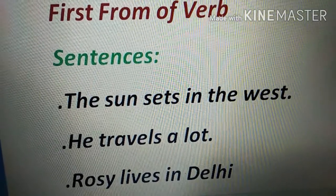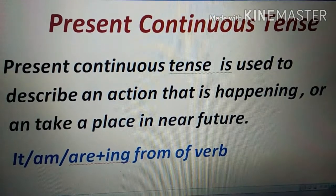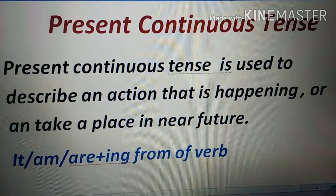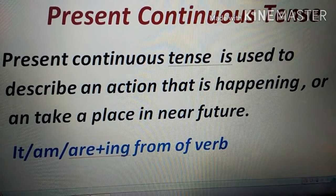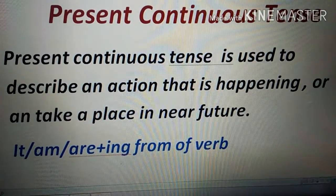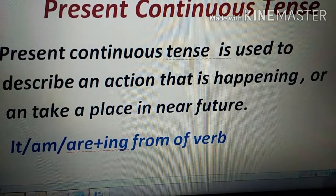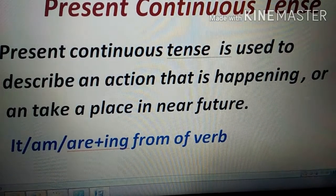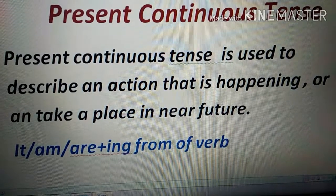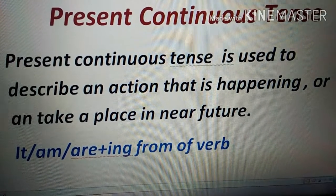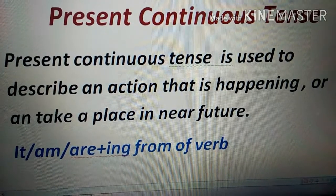Now moving to the next tense: present continuous tense. The word 'continuous' tells you the action is still continuing. Present continuous tense is used to describe an action happening right now — for example, 'I'm teaching' — or an action that is going to take place in the near future, like 'I am going to the market.' The formula for present continuous tense is: is/am/are plus the 'ing' form of the verb.